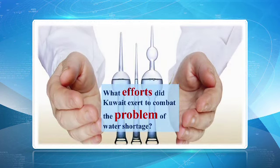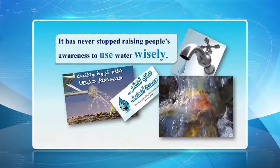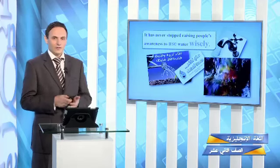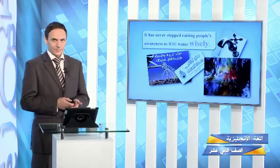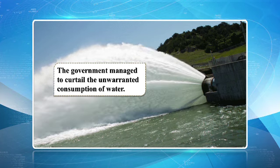What efforts did Kuwait exert to combat the problem of water shortage? Kuwait developed desalination plants — desalination is the process by which salt is removed from water so it can be used for drinking and washing. Kuwait is also studying ways to improve efficiency in the use of water for agriculture. In addition, Kuwait has raised people's awareness to use water wisely through mass media such as TV, newspapers, and radio. The government managed to curtail the unwarranted — meaning illegal — consumption of water.